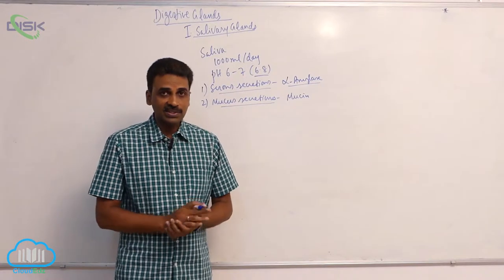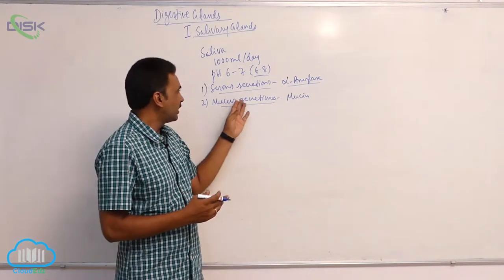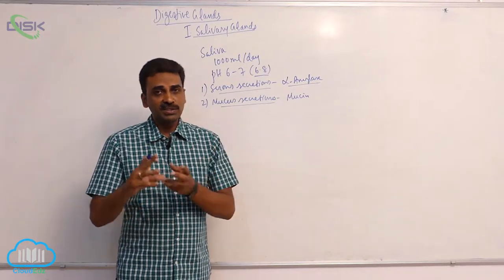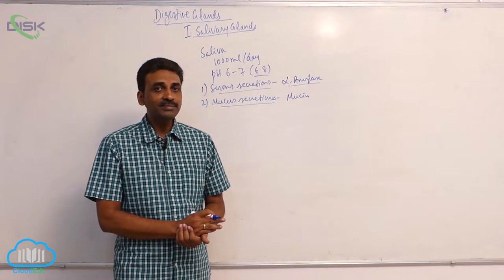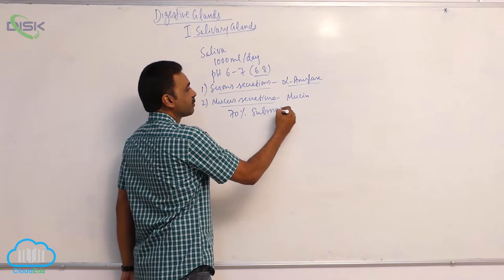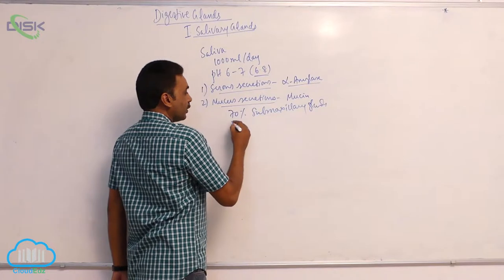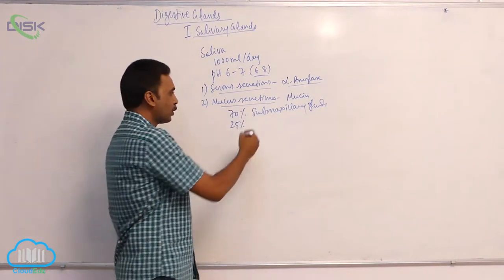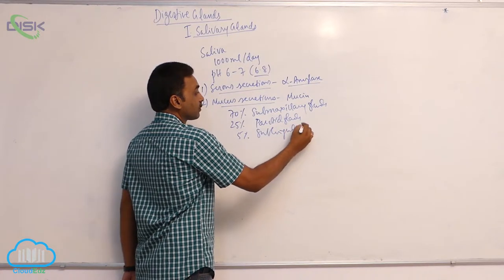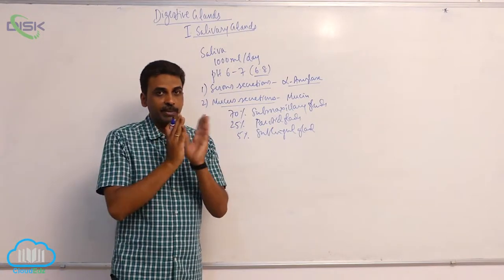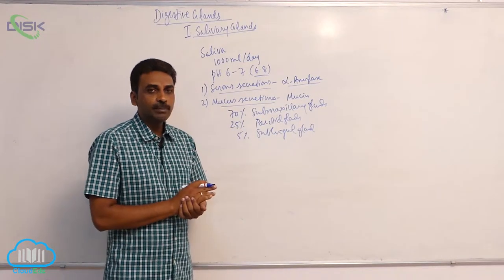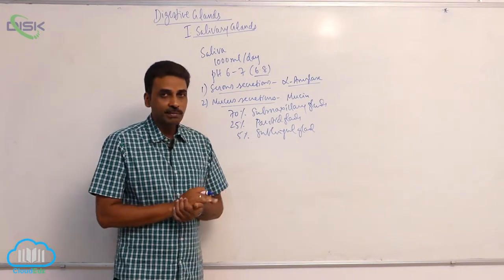Parotid glands contain only serous secretions. The submaxillary and sublingual glands contain both serous and mucous secretions. The minor salivary glands contain mucous secretions. Seventy percent of saliva comes from the submaxillary glands, twenty-five percent comes from the parotid gland, and five percent comes from the sublingual glands.